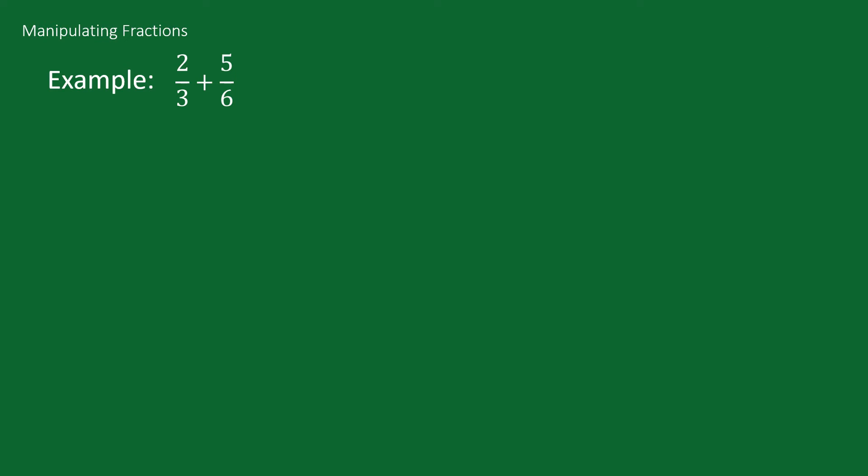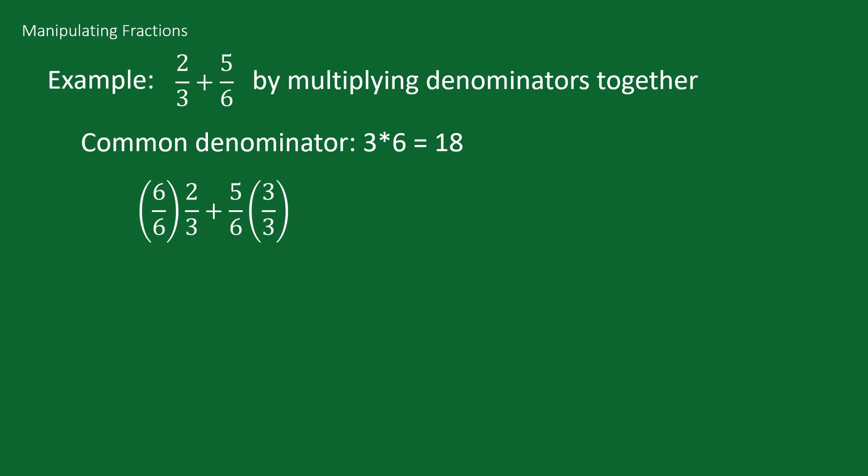If all of that seems complicated, you can just multiply the denominators together to get a common denominator. In this case the common denominator would be 3 times 6, which is 18. Multiplying both fractions we get 6 over 6 times 2 thirds plus 5 over 6 times 3 over 3.